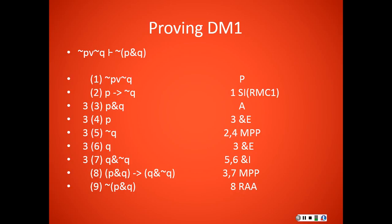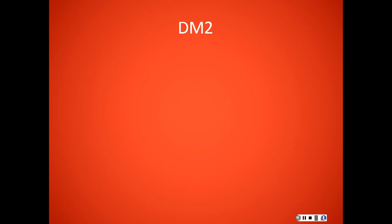So I am now done proving the first of De Morgan's laws. Let's go ahead and work on proving the second of them. The second of them is this: I can take it is not the case that P or Q and turn it into not P and not Q or vice versa. So let's go ahead and work on proving this double-sequent.